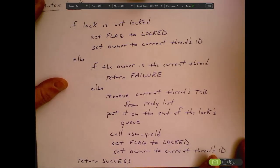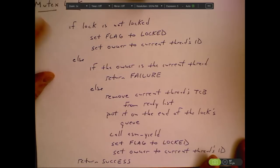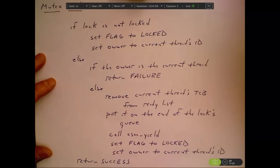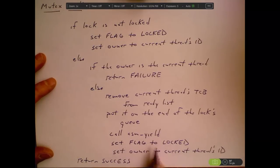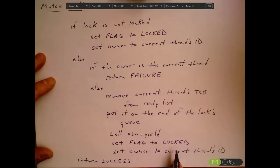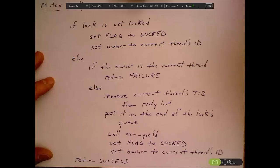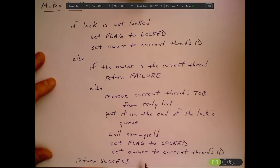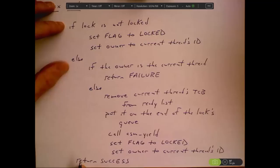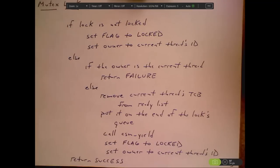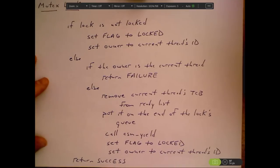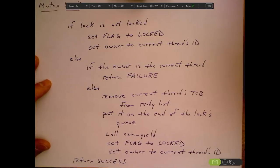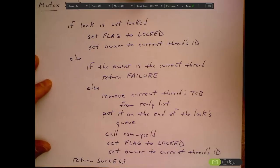Let me think about this for a minute. When ASM yield, when we wake back up from that, we set the flag to locked and we set the owner to be the current thread's ID. We've woken up so we're the current thread at this point. And then exiting either the then or the else clause at this point, we're returning success. That's how it all makes sense, is the question for you to think about.